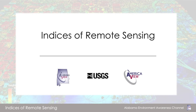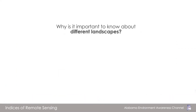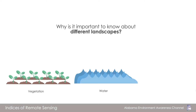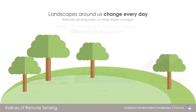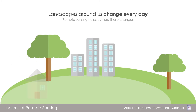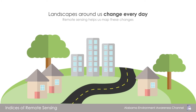Hello viewers. Today we will learn about the different indices calculated to understand and analyze various information from satellite images. Before getting into today's topic, let's try to understand why it is important to know about different landscapes like vegetation, water, and built-up areas of our environment. Landscapes around us are changing every day. Natural surfaces and forests give way to houses, office buildings, croplands, highways, and parking lots.